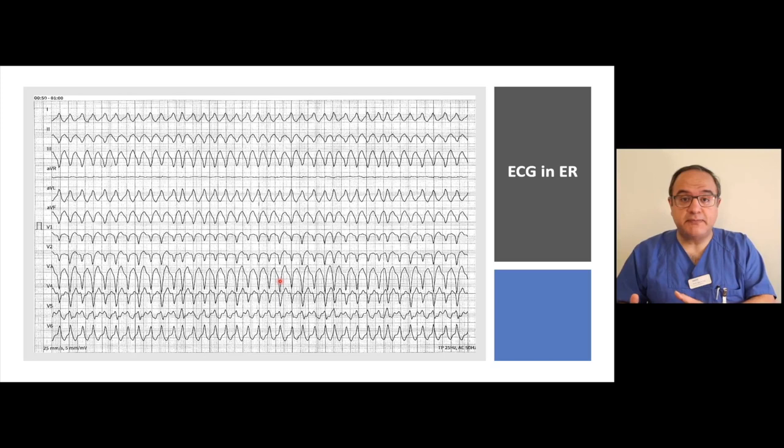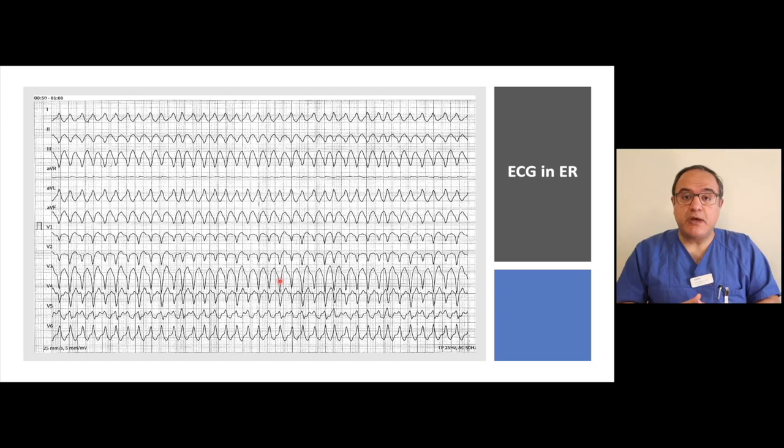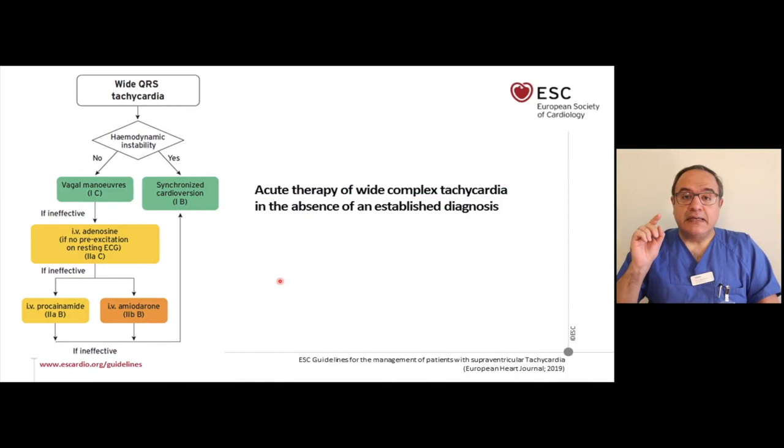At first, we have to think about ventricular tachycardia as a possible diagnosis. When we think of such a ventricular tachycardia, we always have to think about arrhythmogenic right ventricular cardiomyopathy. Of course, with this morphology, we also have to consider a Mahaim accessory pathway and idiopathic VTs, such as VTs originating from the moderator band.